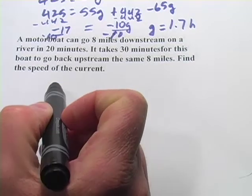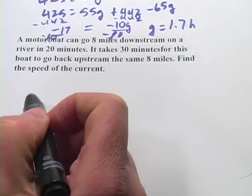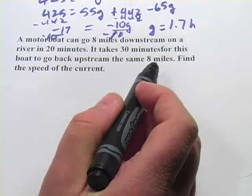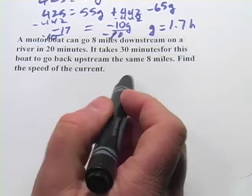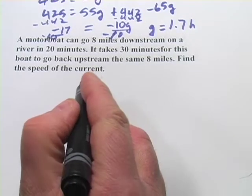It says a motorboat can go 8 miles downstream on a river in 20 minutes. It takes 30 minutes for this boat to go back upstream the same 8 miles. Find the speed of the current.